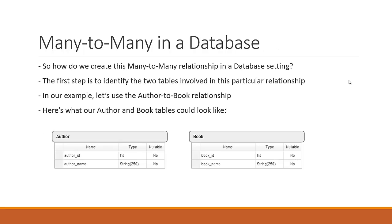So how do we go about creating this many-to-many relationship in a database setting? The first step is to identify the two tables involved in this particular relationship. In our example, let's use the author-to-book relationship, as that is one that is very common for teaching the many-to-many database schema. We have an author table with author ID and author name, and a book table with a book ID and a book name.